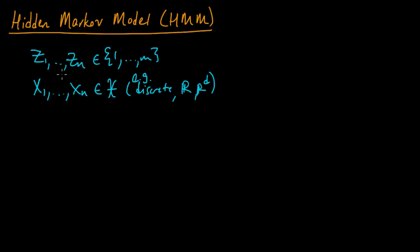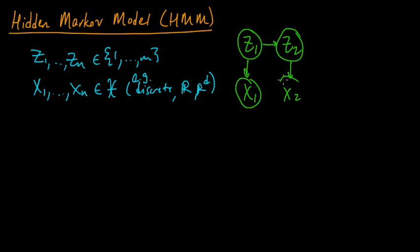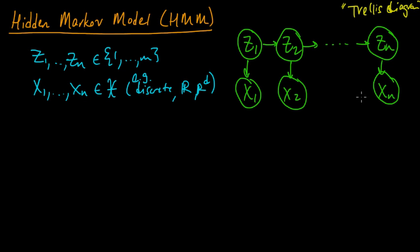And these random variables in the HMM respect the following graph. The joint distribution on these random variables respects the graph: Z1, X1, Z2, X2, Z3, and so on, up to Zn, Xn. This is sometimes called the trellis diagram. And this is the graphical model for an HMM.